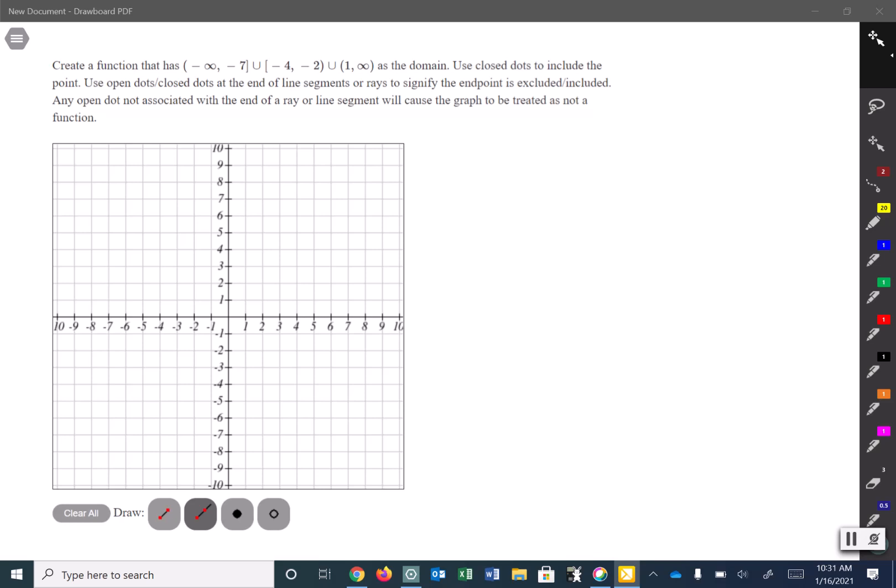Use closed dots to include the point. Use open dots at the end of line segments or rays to signify the endpoint is excluded or included. Any open dot not associated with the end of a ray or line segment will cause the graph to be treated not as a function.